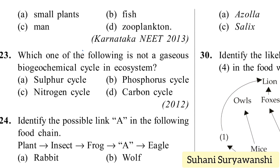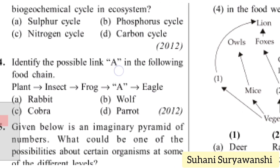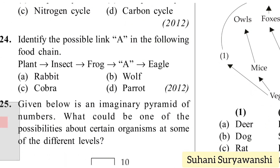Which of the following is not a gaseous biogeochemical cycle in an ecosystem? Options: sulfur cycle, phosphorus cycle, nitrogen cycle, carbon cycle. Phosphorus is not gaseous. Even sulfur is debatable, but the most correct answer is phosphorus.